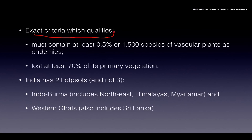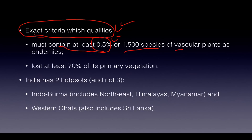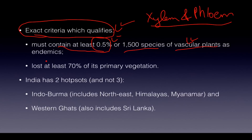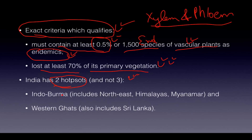The exact criteria to qualify as a hotspot: it must contain at least 0.5% or 1,500 species of vascular plants — which include gymnosperms, angiosperms, etc. — that are endemic to that region, and it must have lost at least 70% of its primary vegetation. India has two hotspots, not three. People sometimes differentiate Northeast and Himalayas, but they are one — called the Indo-Burma region, which includes Myanmar. The second is the Western Ghats, which includes Sri Lanka.